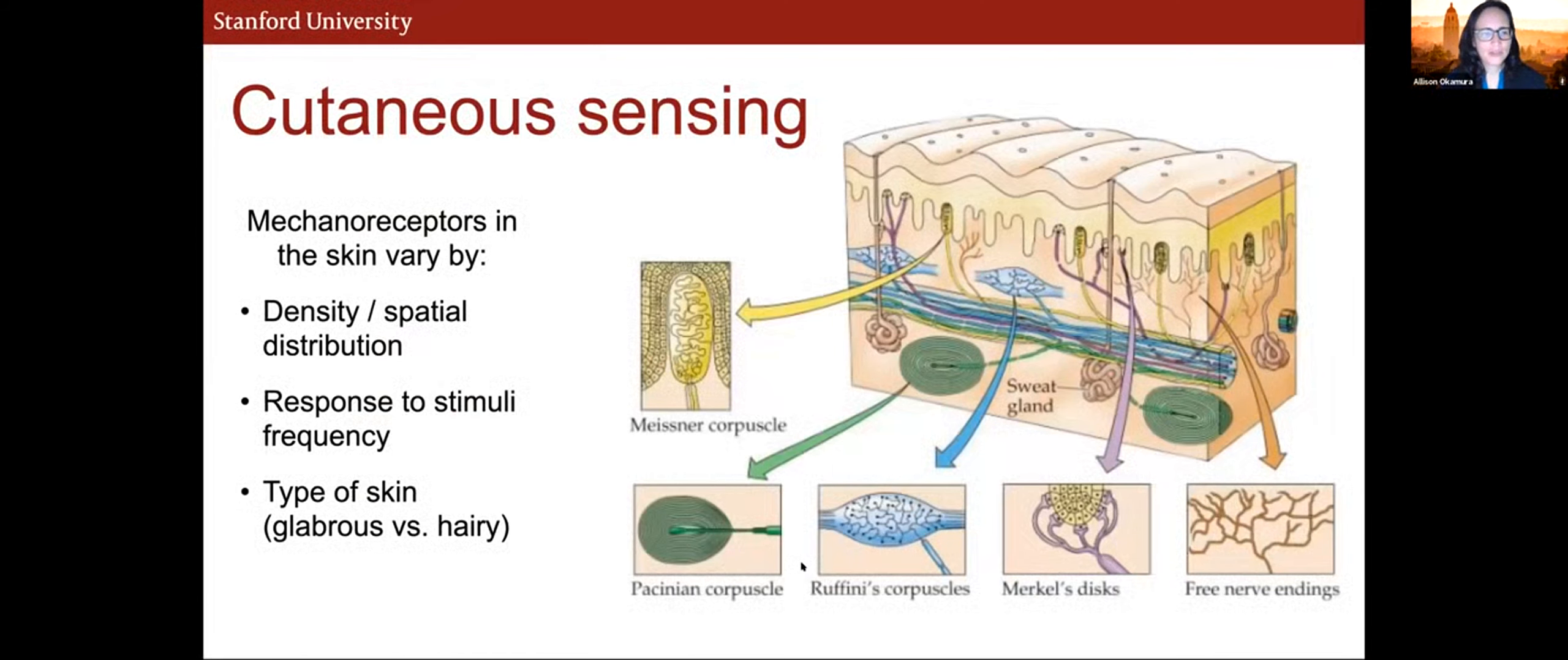So I won't go into a full tutorial in the time that we have on cutaneous sensing. But it is important to know that in addition to the kinesthetic haptic feedback that we often think about, we have many different mechanoreceptors embedded in the skin. They have different densities. They respond to different frequency of stimuli. And the types of mechanoreceptors also differ in the glabrous or non-hairy skin of areas like the fingertips and the soles of the feet, and the hairy skin, such as the back of the hand or on the arm or the back of the body. And it's very important to understand and know about these cutaneous mechanoreceptors if you are trying to stimulate them in order to provide haptic information.